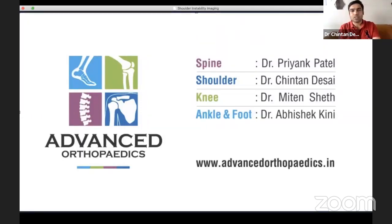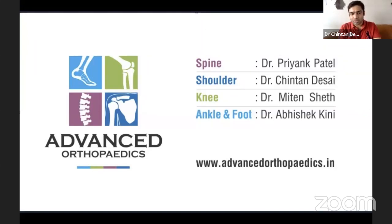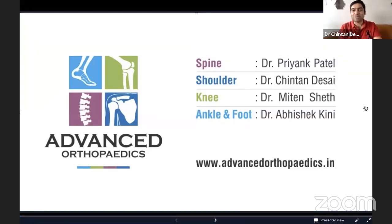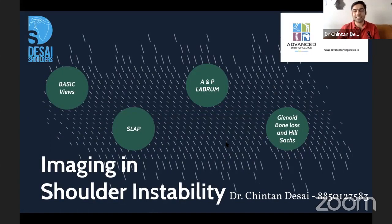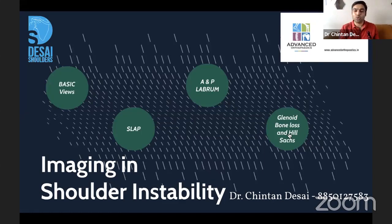I'm Dr. Chintan Desai, part of the advanced orthopedics team dealing with shoulders. Today I'll be talking about imaging and shoulder instability — mainly shoulder MRIs and CT scans. We're going to cover some basic views, SLAP injuries or SLAP tears, the anterior and posterior labrum, glenoid bone loss, and Hill-Sachs lesions.